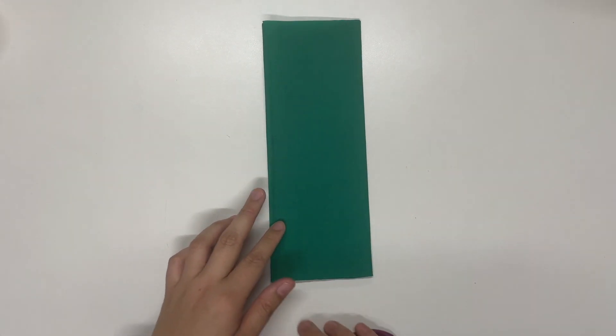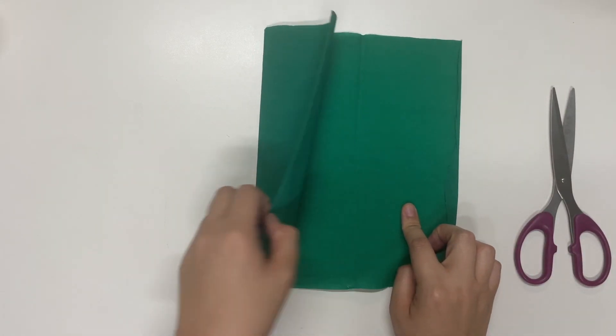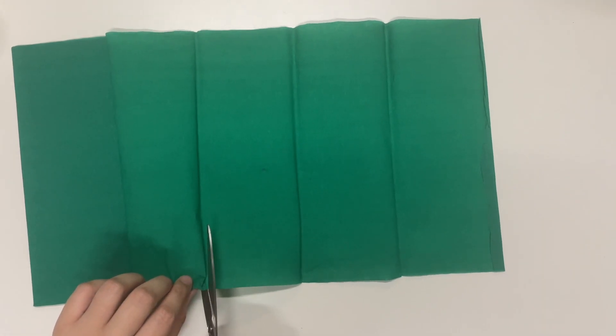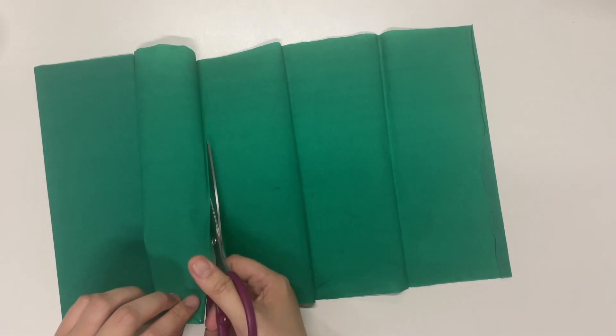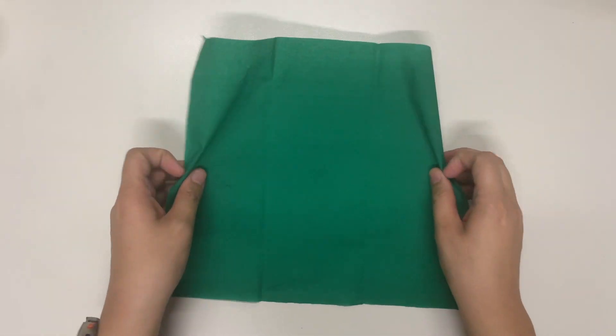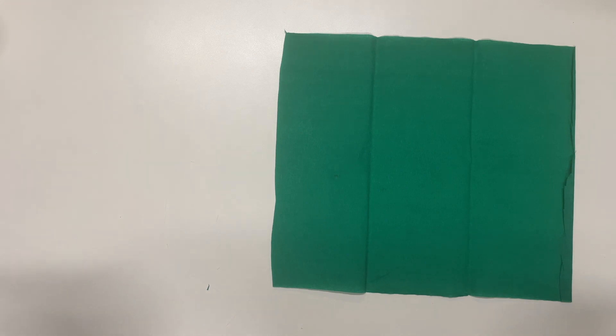And then when we unfold it, we're going to measure by the width. So we're going to cut three sections of the width. So that's three rectangles. I just measured it this way so that I'm sure that this piece of crepe paper can cover my paper cup.